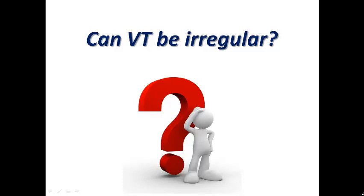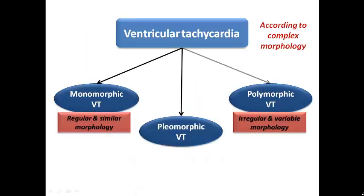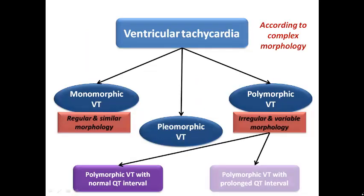Moving to another possibility of irregular wide complex tachycardia: VT. Can VT be irregular? Yes, VT can be irregular. We remember from the lecture on ventricular tachycardia that VT can be classified according to complex morphology into monomorphic, polymorphic, and pleomorphic. Monomorphic VT would be regular with similar complex morphology, while pleomorphic VT can be irregular, showing variable morphology.